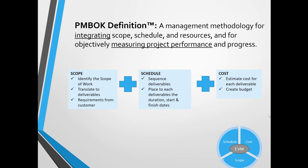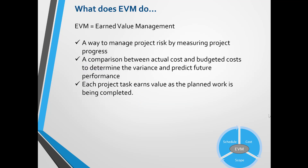EVM is a way to manage project risk by measuring project progress. It is also a comparison between actual cost and budgeted costs to determine the variance and predicted future performance. Lastly, each project task earns value as the planned work is being completed.